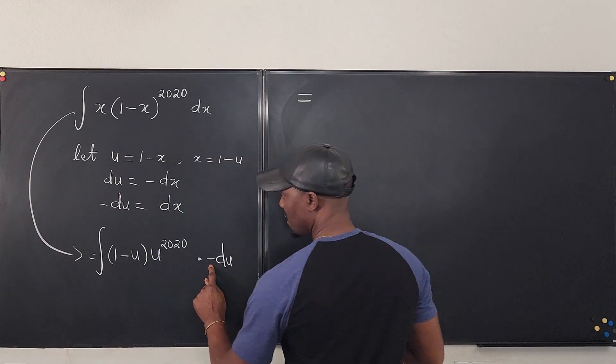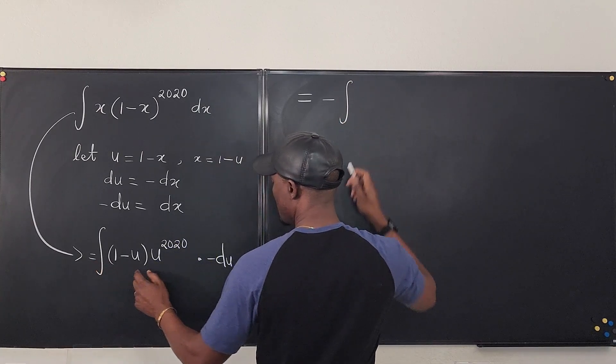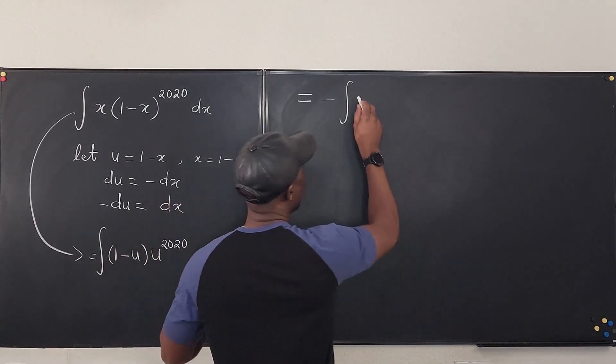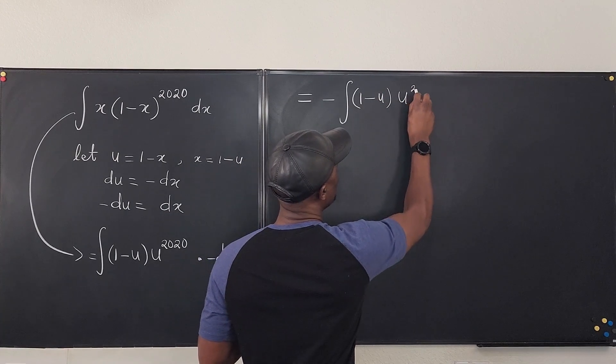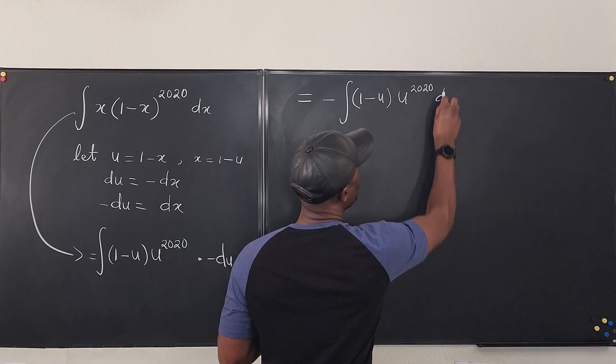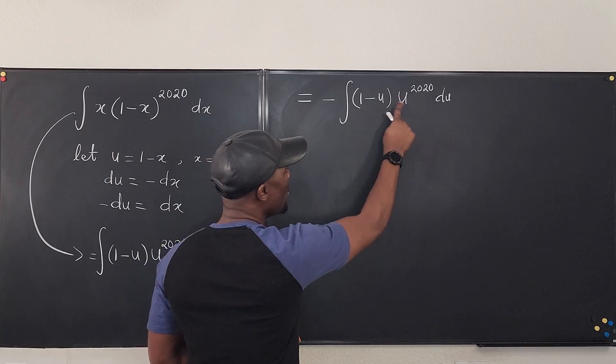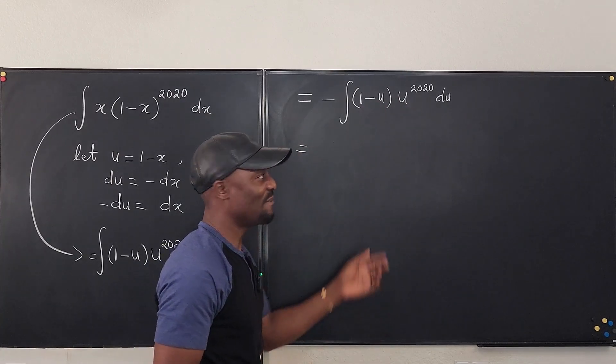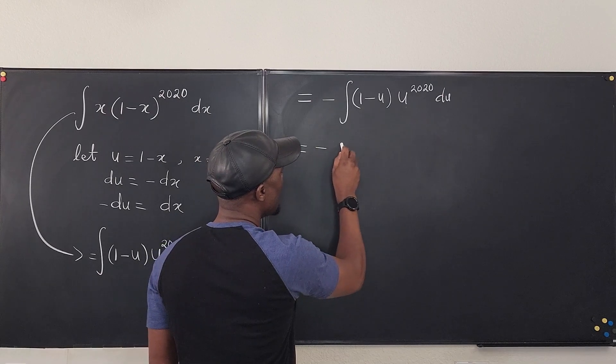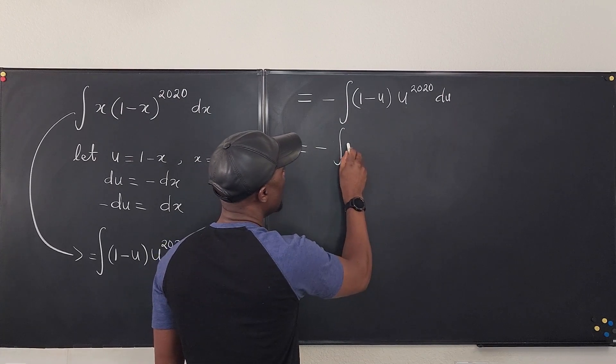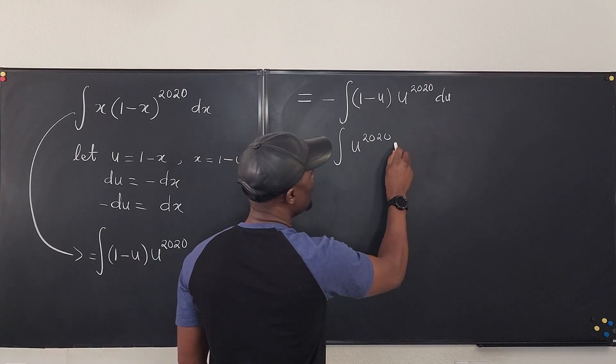This minus is capable of going back here so it's going to be minus the integral of 1 minus u times u to the 2020 left with du. So our integration is in terms of du now and I can multiply this easily - it's a polynomial expansion. One times this is going to give me minus the integral of u to the 2020, then this times this will be minus u to the - you add the exponents - you have 2021.